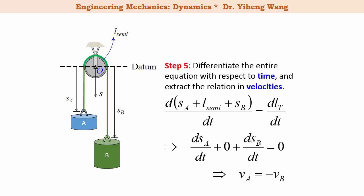And this agrees with our initial guess that the two particles will move at the same speed, but the negative sign indicates that the direction of motion will be opposite. When A moves up, B moves down, and vice versa.